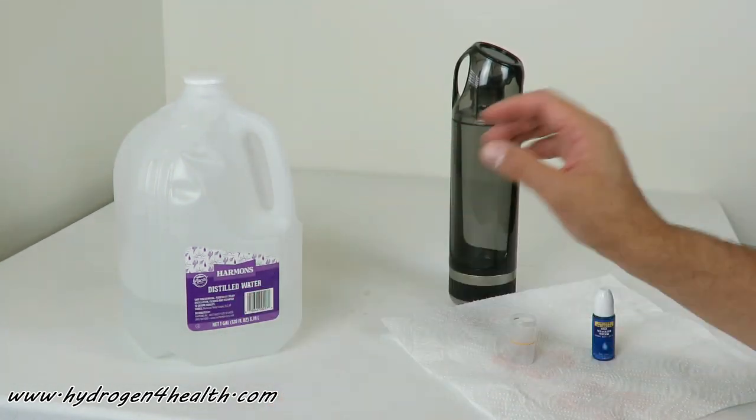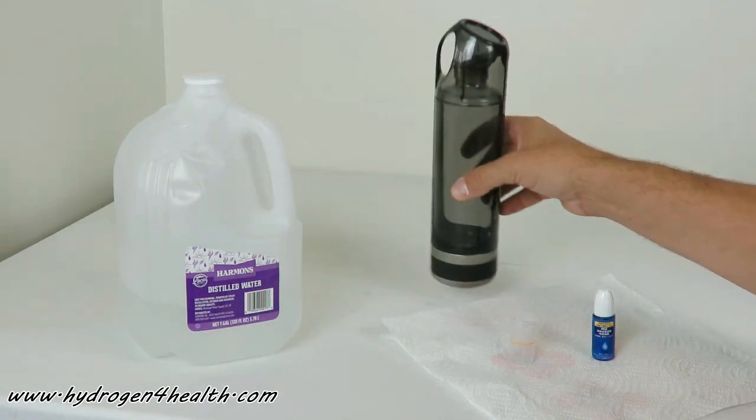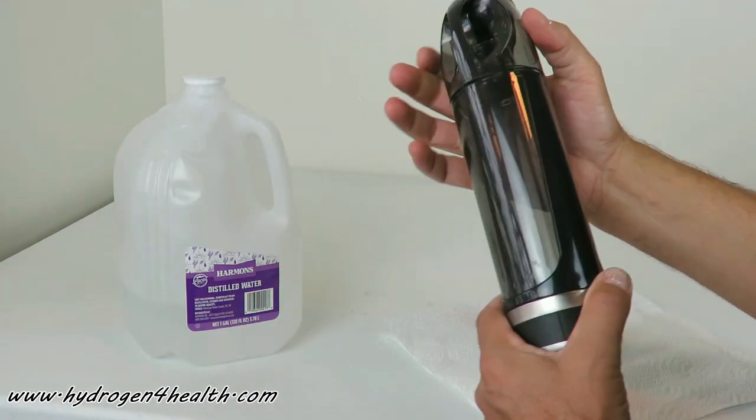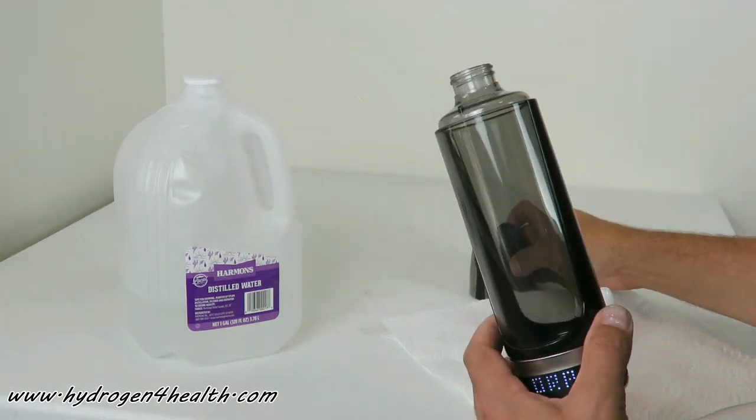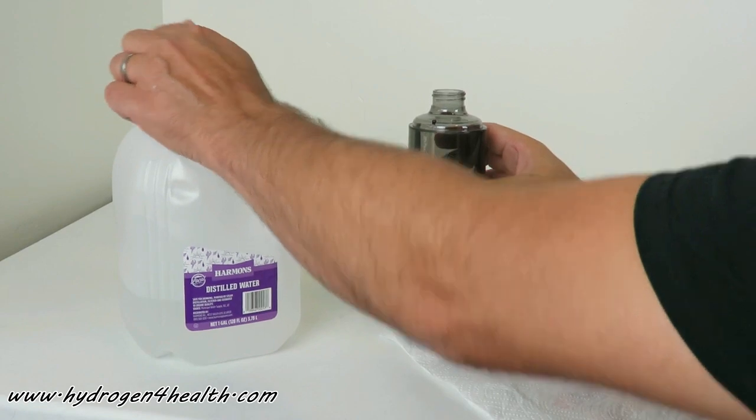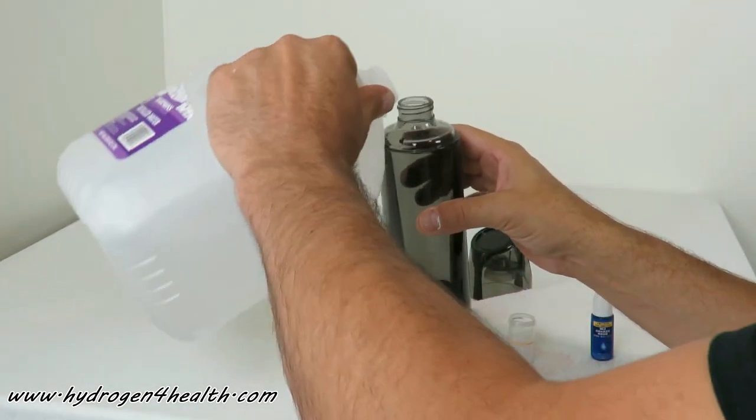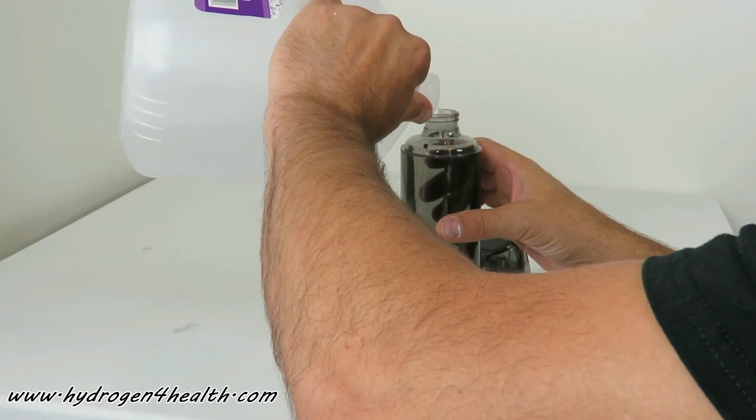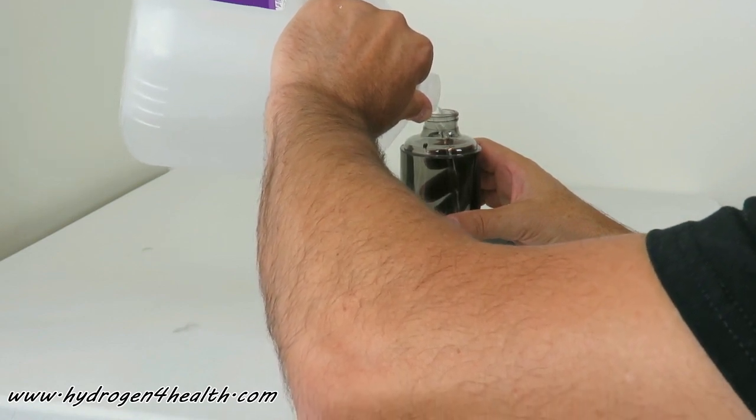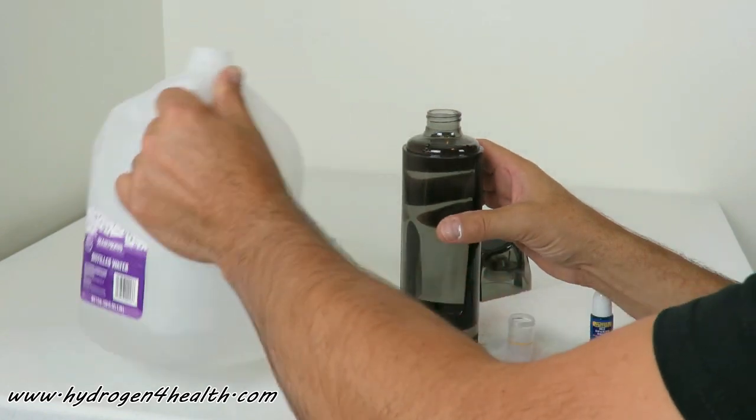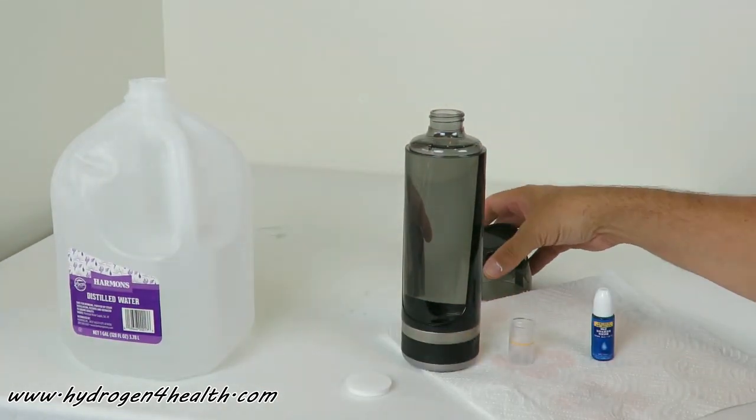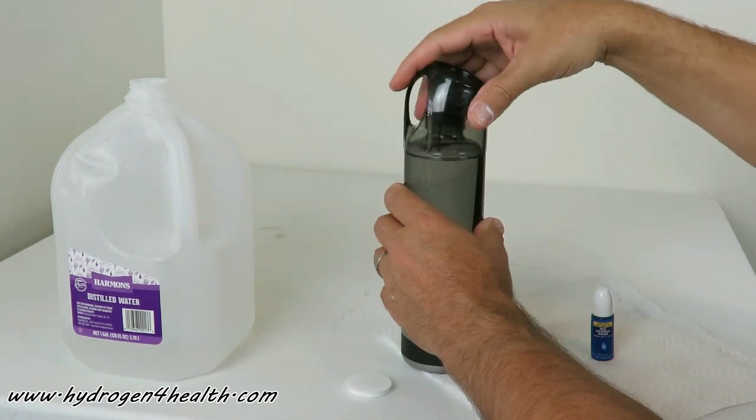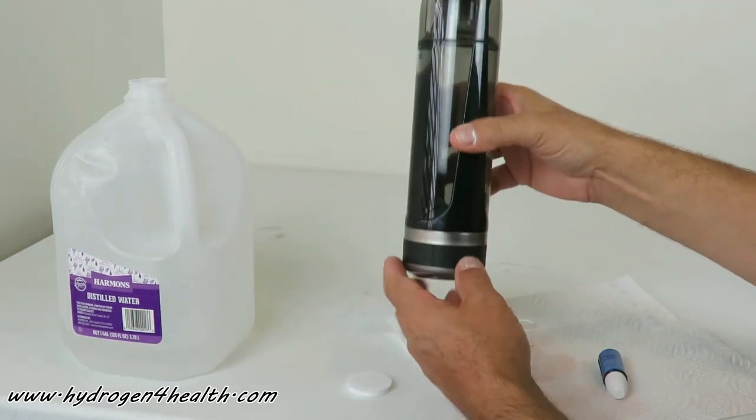So we're using distilled water today. If you use distilled water in one of these bottles, you'll be okay. It won't generate any chlorine or ozone. Let's go ahead and fill it up. Okay, we've got it nearly to the top there. Go ahead and put the top back on, and then let's start it up.